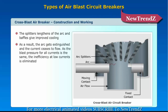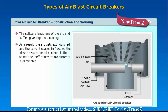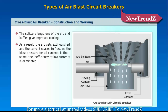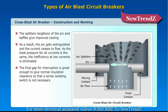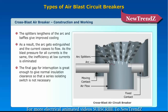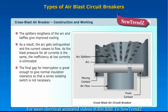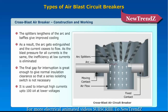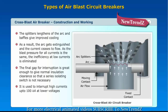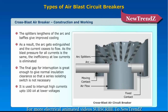The splitters lengthen the arc and the baffles give improved cooling. As a result, the arc gets extinguished and the current ceases to flow. Since the blast pressure for all currents is the same, inefficiency at low currents is eliminated. The final gap for interruption is large enough to provide normal insulation clearance, so a series isolating switch is not necessary. It is used to interrupt high currents up to 100 kA at lower voltages.